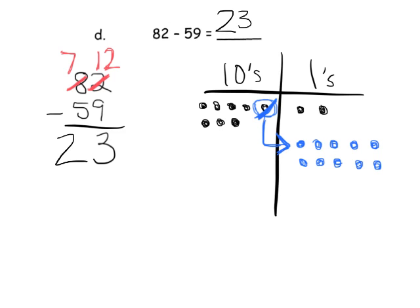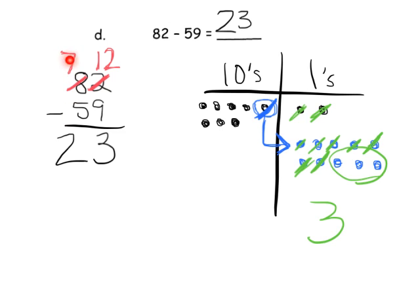And sure enough, we can verify this on the place value chart. 12 take away 9 means we cross off 9 dots: 1, 2, 3, 4, 5, 6, 7, 8, 9, leaving us with 3. Then 7 take away 5 means we cross off 5 tens: 1, 2, 3, 4, 5, leaving us with 2 tens. So the answer is 23.